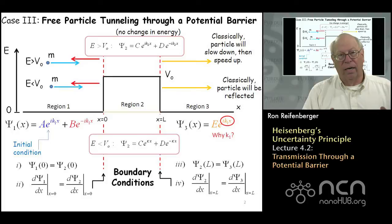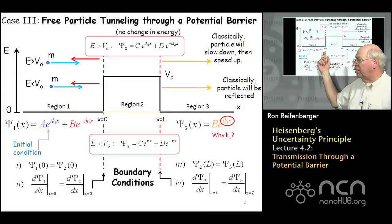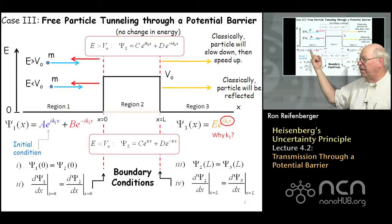To calculate the transmission and reflection probabilities, we're going to follow the same prescription as in the previous lecture. We're going to insist that the wave function and its first derivative be continuous at x equal to 0, and that the wave function and its first derivative be continuous at x equal to L. These particles are represented by free particle wave functions, so they're going to have an e to the ikx type of argument.